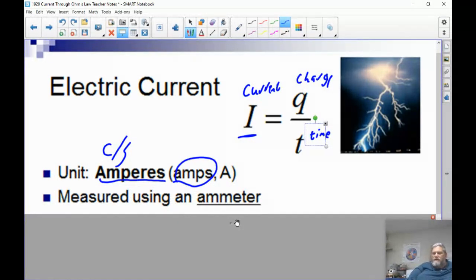We measure current in a circuit using an ammeter, which you did in the lab yesterday. You didn't actually use an ammeter, but you took a little thing that represented the ammeter, put it in the circuit, and it measured the current.